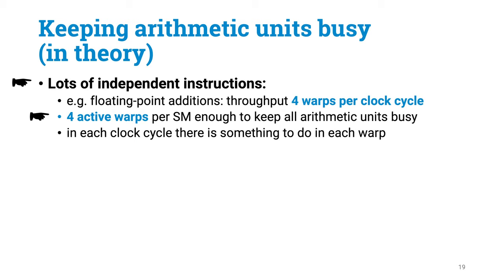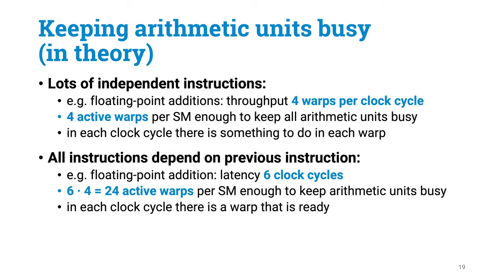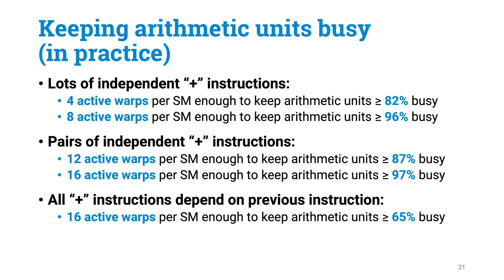At each clock cycle, each scheduler can find a warp ready for execution. But what if you don't have any instruction-level parallelism — what if you have only a long sequence of additions that depend on previous additions? Then you would need a much larger number of active warps. If you want to keep all arithmetic units busy all the time, and there are four arithmetic units and the latency of one addition is six cycles, you would need as many as 24 active warps. This is the theory, and when the number of active warps is at most 16, there is also very good agreement between theory and practice.